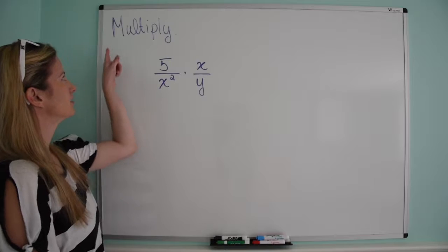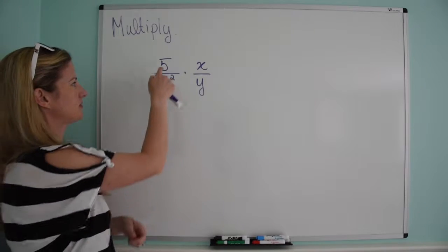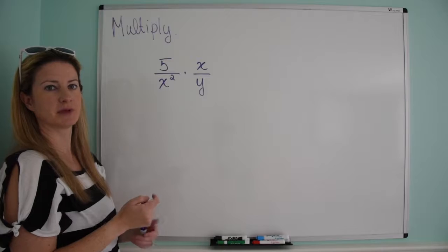Let's try this problem. So we are multiplying two fractions. We've got 5 over x squared times x over y.